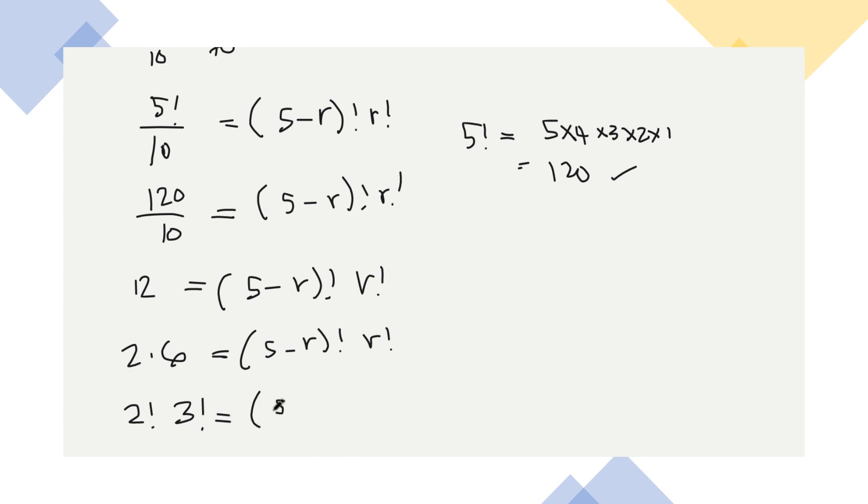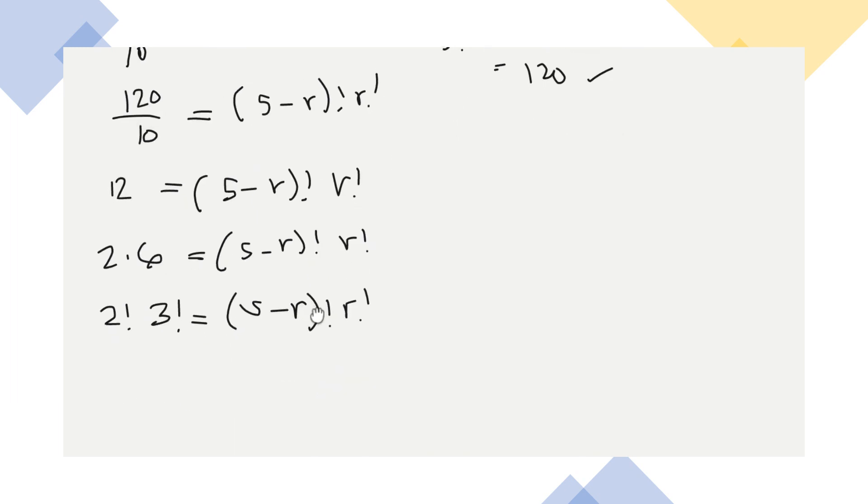Next, this will be (5-R) factorial R factorial. Yan, we are solving for r kasi, diba? So yan na po yun. Yan na yung factorial form niya. So we express 2 and 6 in factorial. So that will be 2 factorial and 3 factorial. Yan, pangit nang 5, sulat natin again. So that will be 5.